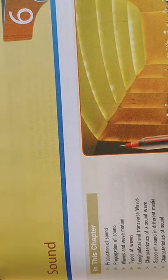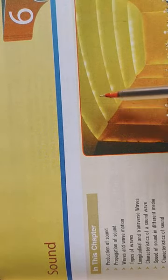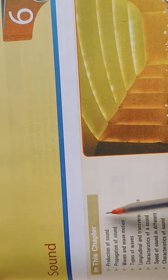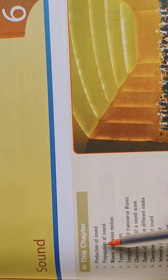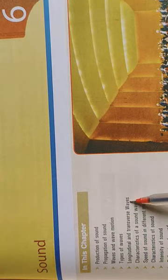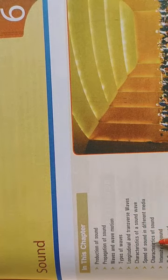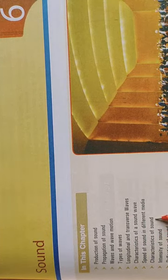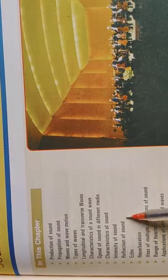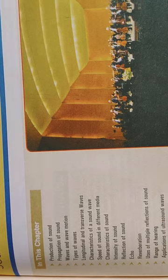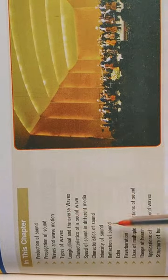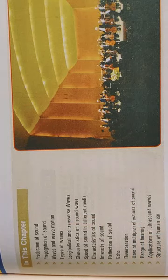Students, today we will study a new chapter — Chapter 6: Sound. Under this chapter we will cover the following topics: production of sound, propagation of sound, wave and wave motion, types of waves (longitudinal and transverse), characteristics of sound, speed of sound in different media, intensity of sound, reflection of sound, echo, reverberation, uses of multiple reflection of sound, range of hearing, application of ultrasound, and structure of the human ear.